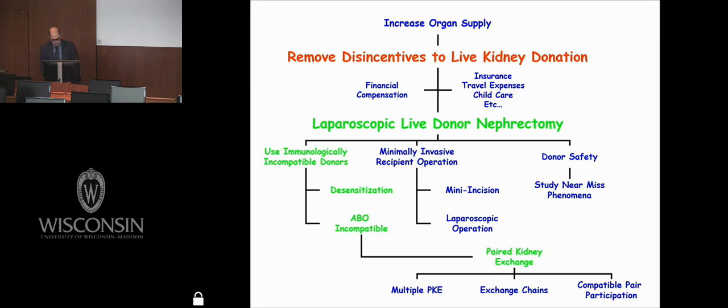Now let's talk about: we've innovated, how do we bring these new ideas to clinical reality? This is a flow chart of the academic work I've done, where my main focus is to increase the organ supply and remove disincentives to donation. That led to the laparoscopic donor nephrectomy, which led to the use of immunologically incompatible donors, protocols for desensitization and ABO-incompatible transplantation, and then paired kidney exchanges.